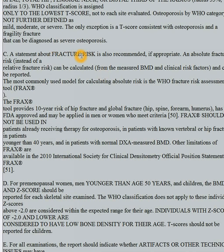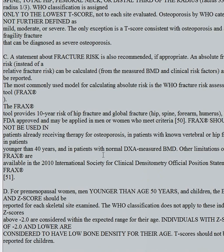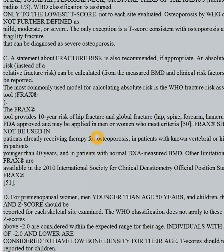Remember, FRAX is only valid in people who are over 40 years old. You can add it to the Z-score template if they're between 40 and 50, since Z-scores are for people under 50 — but not for people younger than 40. You only give FRAX to people who have abnormal bone density, meaning osteopenia or osteoporosis that hasn't yet been treated. Once you start treating osteoporosis, you don't continue to give the FRAX risk assessment.